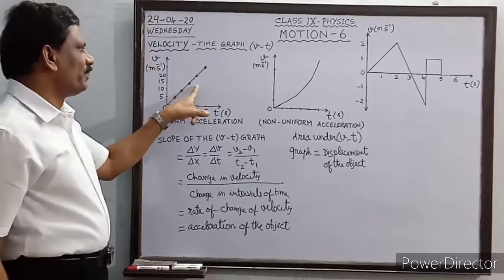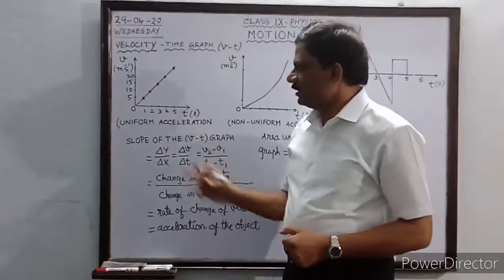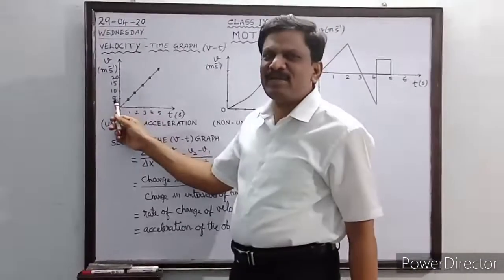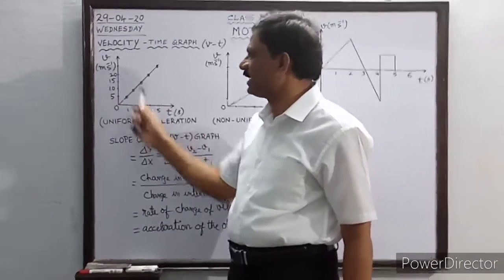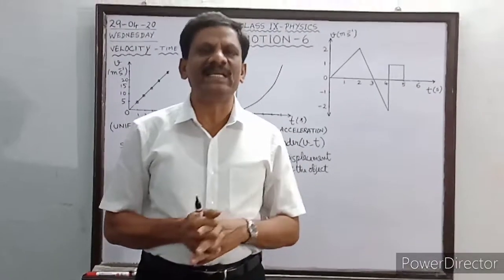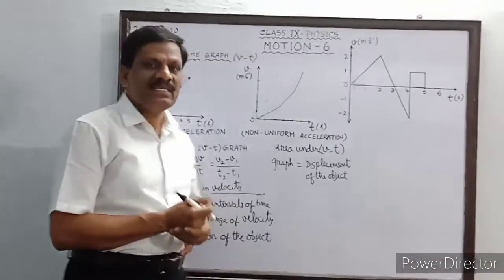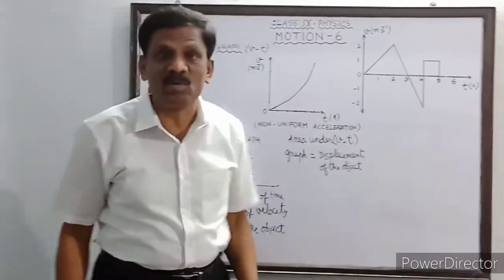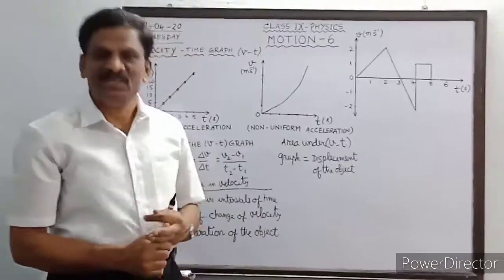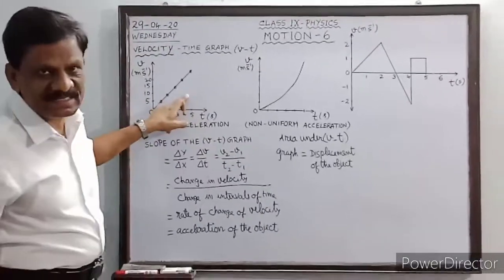In the first V-T graph, the shape is a straight line passing through the origin. After 1 second, the velocity is 5 m/s; after 2 seconds, 10 m/s; after 3 seconds, 15 m/s; after 4 seconds, 20 m/s; after 5 seconds, 25 m/s. The velocity changes by equal amounts in equal intervals of time, so the body has uniform acceleration.